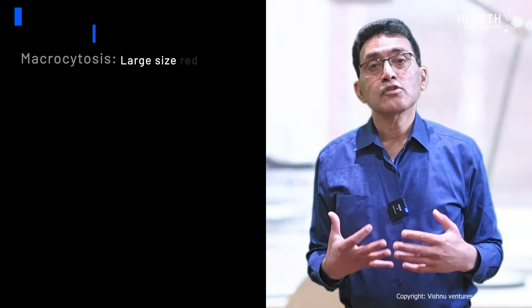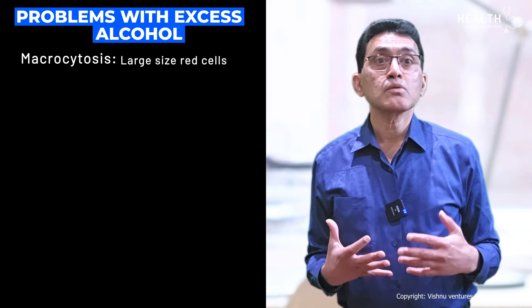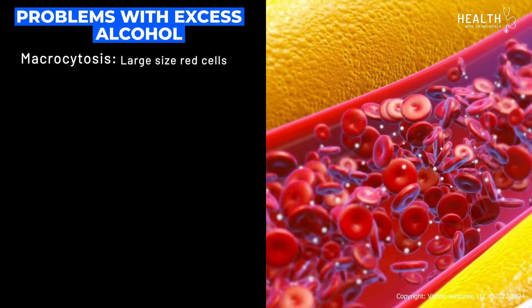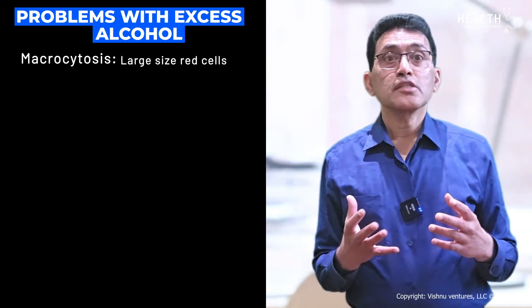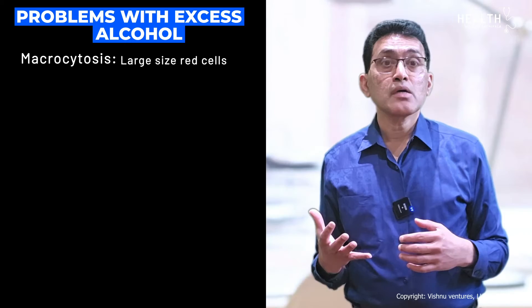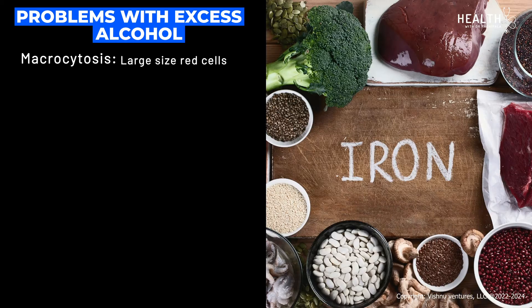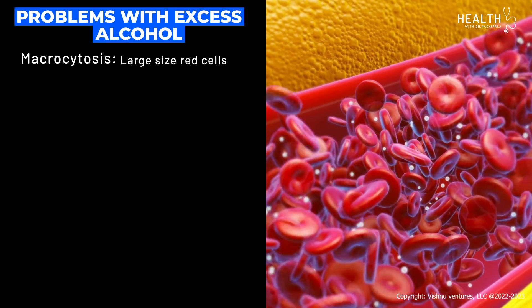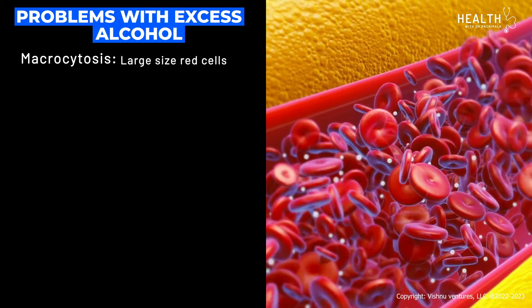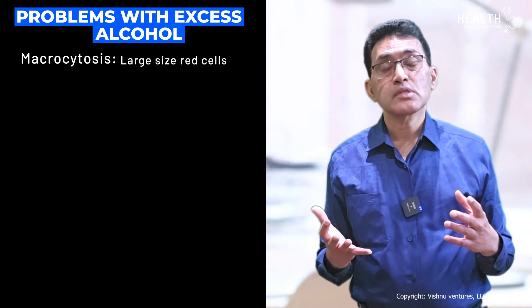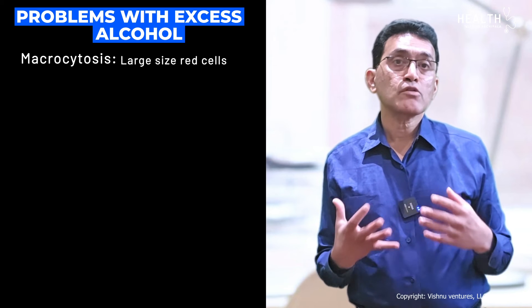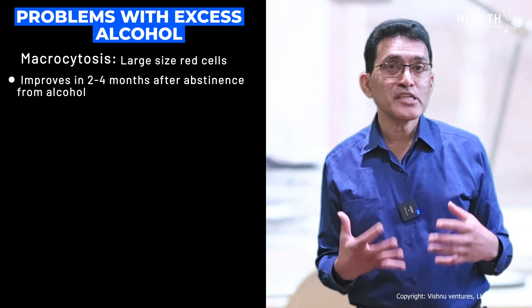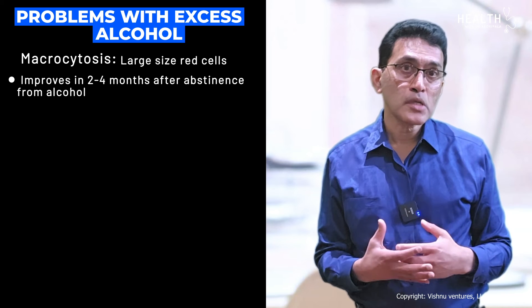Alcohol intake can also lead to what is called macrocytosis, which is basically an increased size of the red cells. This can occur even before anemia and even when there is no deficiency of iron, B12, or folic acid. When you take alcohol the size of the cells increases; we call this macrocytosis, and it typically gets better once you stop drinking alcohol, taking two to four months to improve.